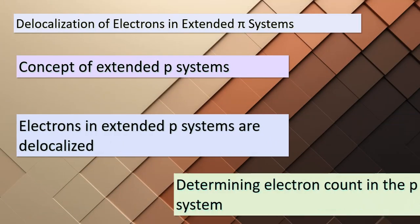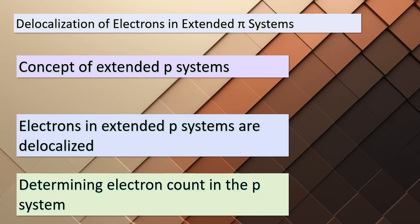Today we're delving into the captivating world of electron delocalization within extended pi systems. Imagine molecules where pi electrons — those involved in double bonds or aromatic systems — spread out over more than just two bonded atoms. This phenomenon is known as delocalization: these electrons aren't confined to a single bond but are free to move across multiple atoms. We can employ the procedures we've previously discussed to determine the electron count in the pi system, giving us insight into the fascinating behavior of these delocalized electrons.